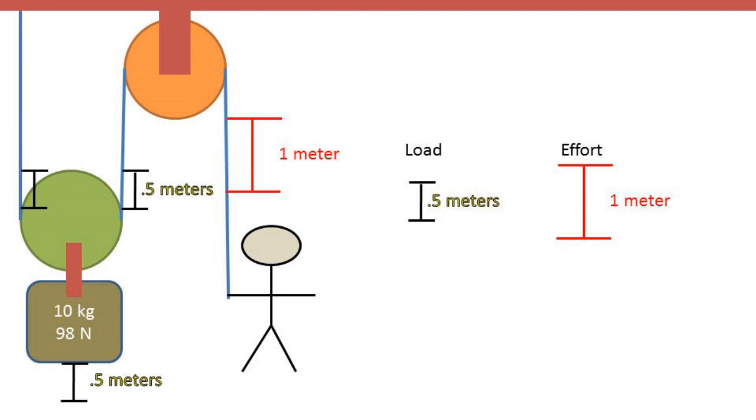In the two pulley system, if you pull one meter of rope, the load only moves half a meter. Two halves are taken up on each side of the green pulley to account for one meter of pull. So, similar to levers, we increased the displacement by two and cut the force needed to move the object in half.